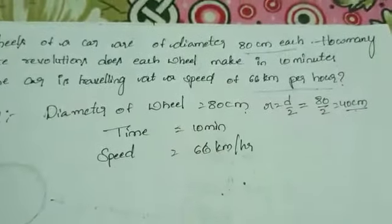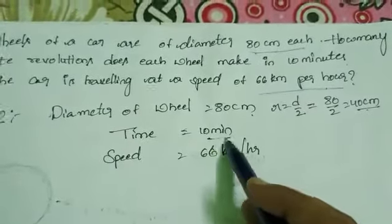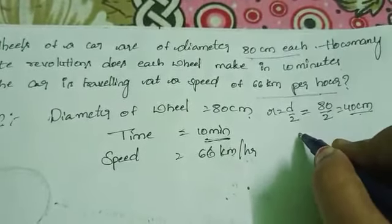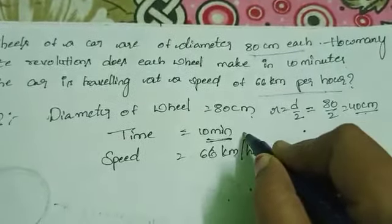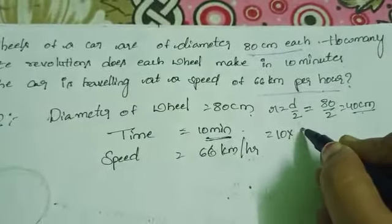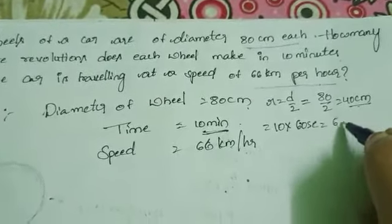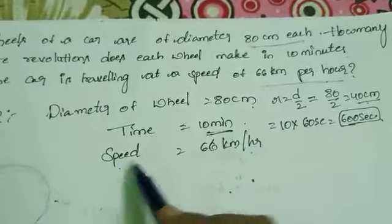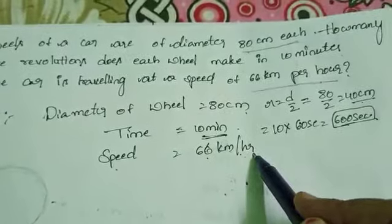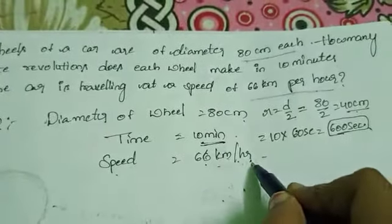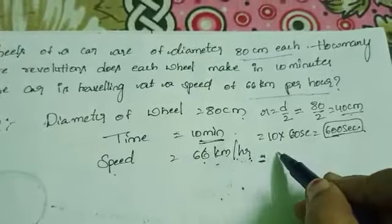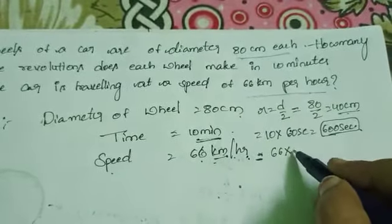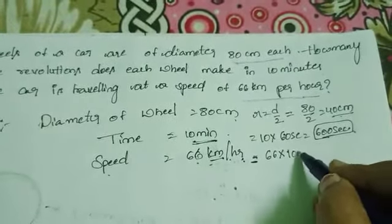First, write the given data. Diameter of the wheel is 80 cm. Radius equals diameter divided by 2, so radius of the wheel equals 80 by 2, which is equal to 40 cm. Time equals 10 minutes, which means 10 into 60 seconds, equal to 600 seconds. Speed equals 66 km per hour.